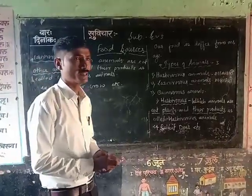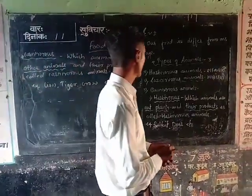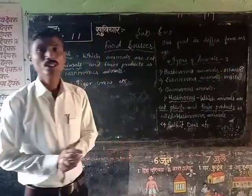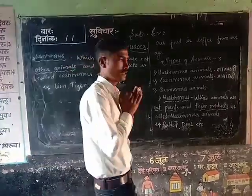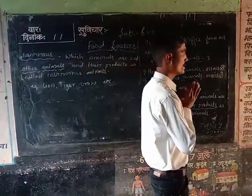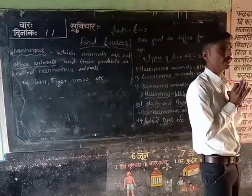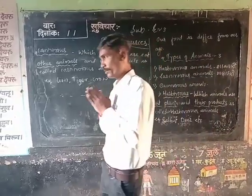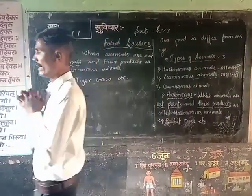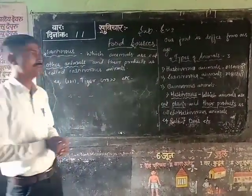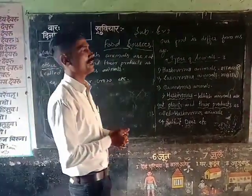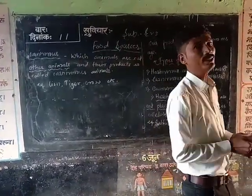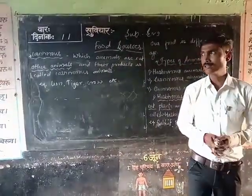Today, we are studying last class types of animals. There are three types of animals. First one is herbivorous animals. Second one is carnivorous animals. And the third one is omnivorous animals. So last class we were studying and learning about the herbivorous animals.